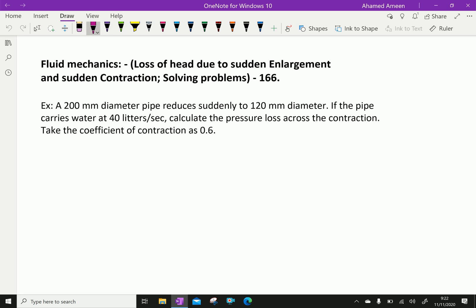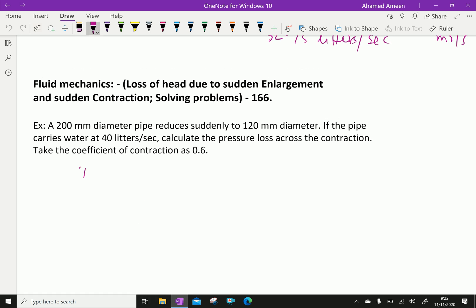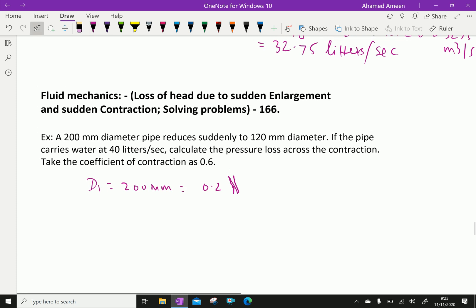First, large diameter D1 equals 200 mm which is equal to 0.2 meter. Smaller diameter D2 equals 120 mm equal to 0.12 meter.